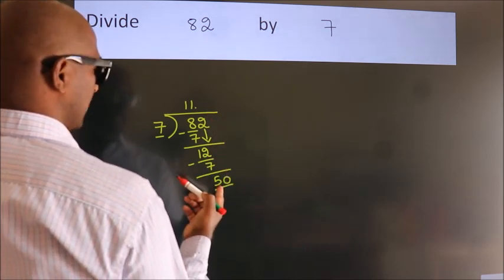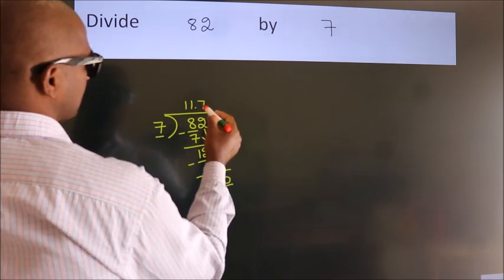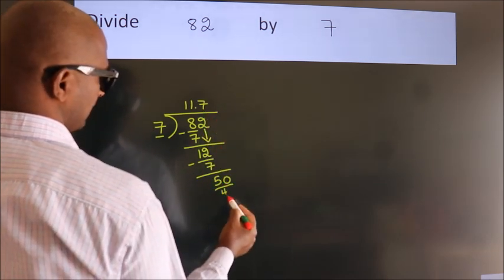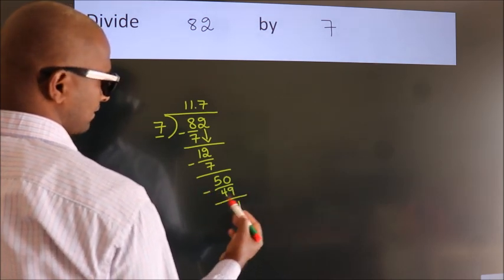A number close to 50 in the 7 table is 7 sevens 49. Now, we subtract. We get 1.